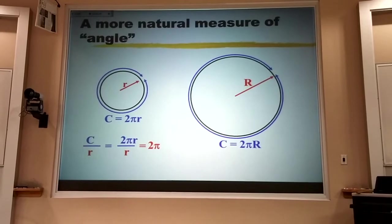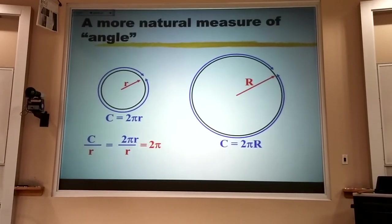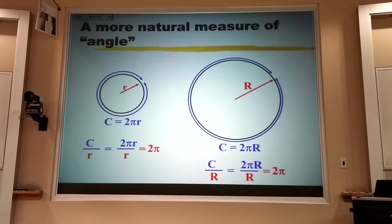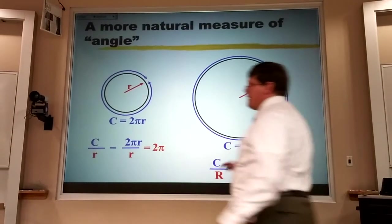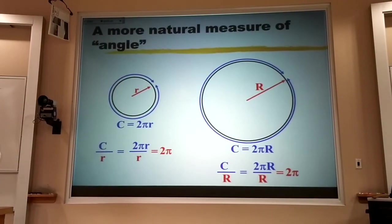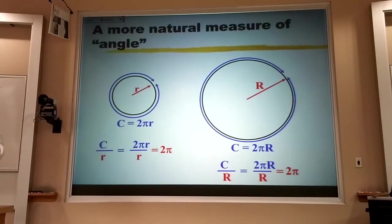And it turns out that that's what you get if you measure your angle in radians. We say that once around is 360 degrees or 2π radians, 2π radians.